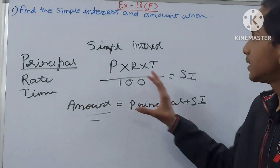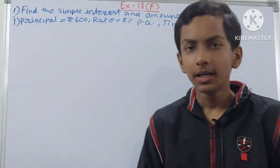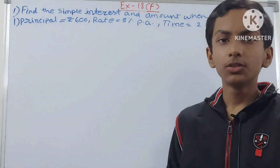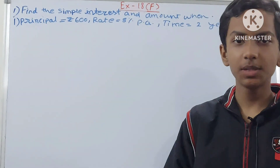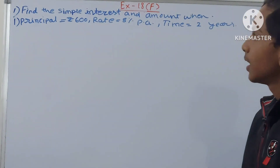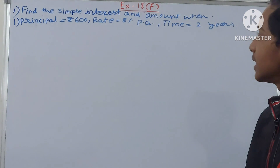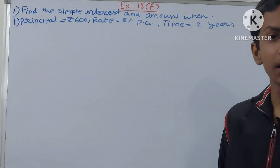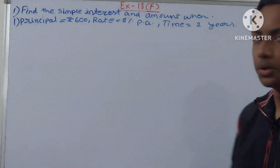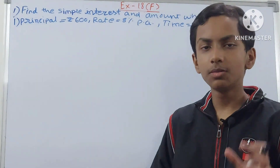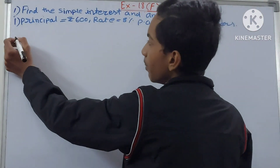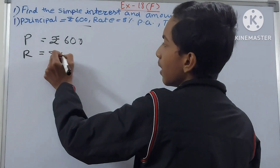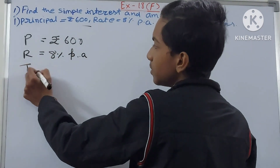The first question says: find the simple interest and amount. Simple interest is PRT ÷ 100, and amount is principal plus simple interest. The first part: principal is rupees 600, rate is 8 percent per annum (per year), and time is two years. To find the amount we must first find the simple interest. So P = 600, R = 8% per annum, T = 2 years.